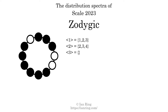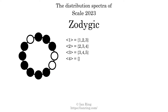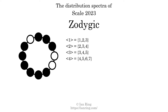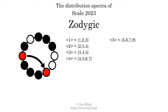The generic interval of three scale steps comes in three different specific interval sizes: three semitones, four semitones, and five semitones. The spectrum width of this generic interval is two. The generic interval of four scale steps comes in four different specific interval sizes: four semitones, five semitones, six semitones, and seven semitones. The spectrum width is three. The generic interval of five scale steps comes in four different specific interval sizes: five, six, seven, and eight semitones. The spectrum width is three.